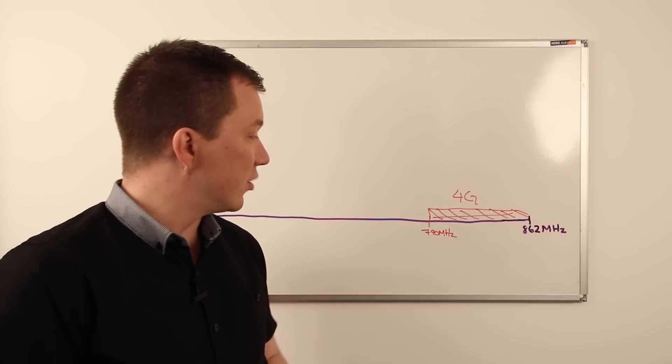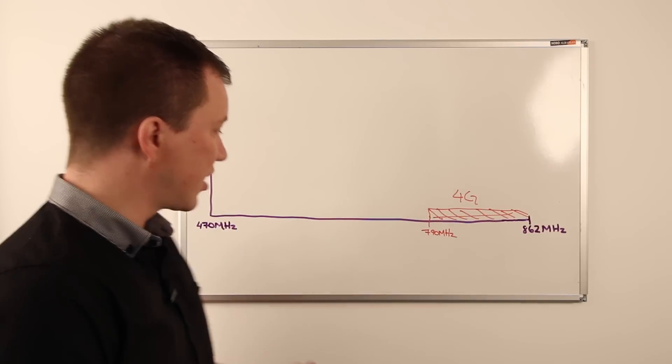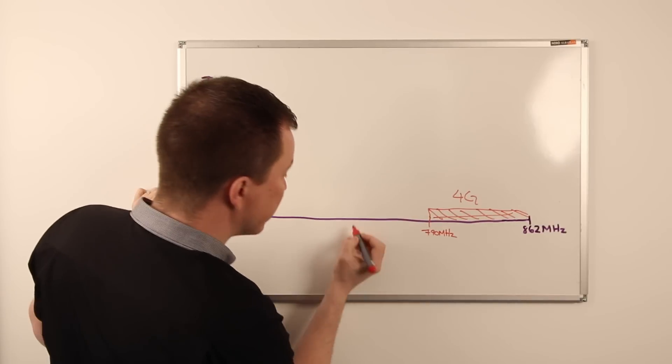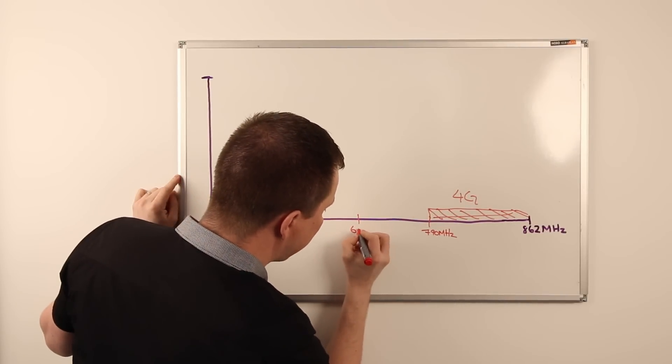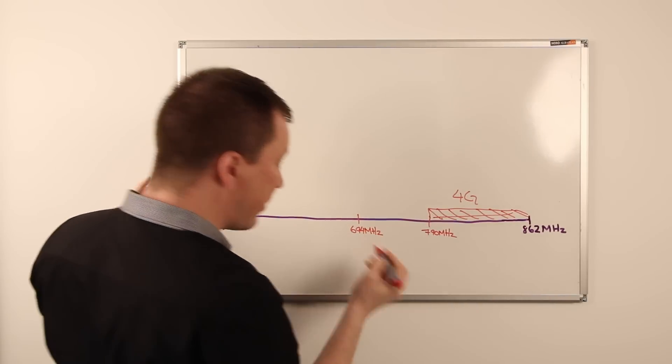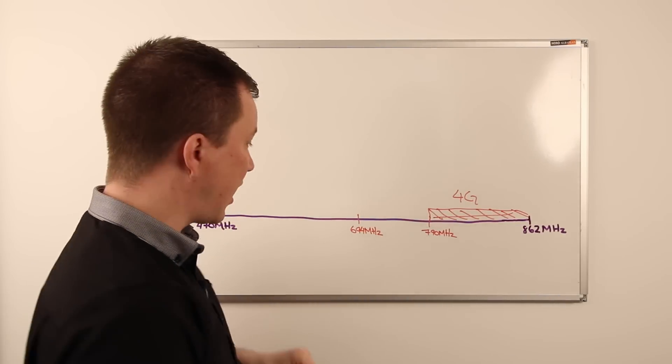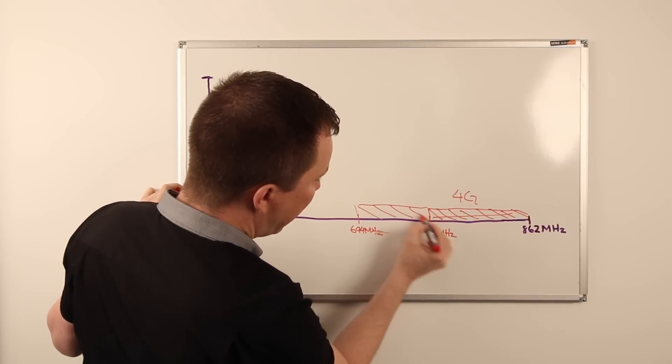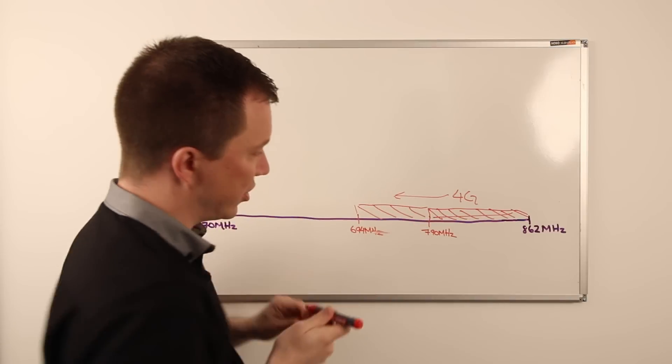So at the recent World Radio Conference the discussion was what to do with a further block of UHF spectrum, and specifically we're talking about 694 megahertz and up. The World Radio Conference came to the decision that this spectrum would also be cleared and joined up for further 4G services.